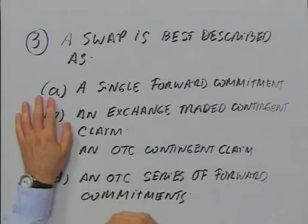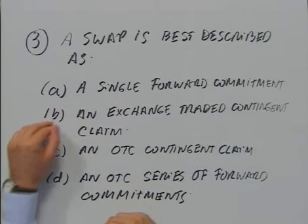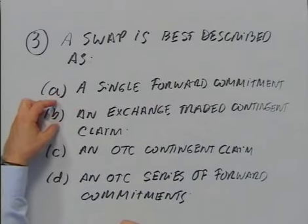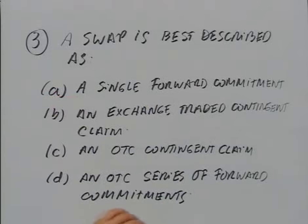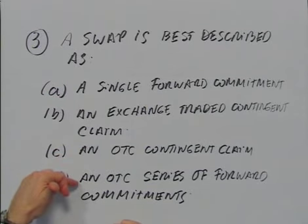Now a question regarding swaps. A swap is best described as: A, a single forward commitment; B, an exchange-traded contingent claim; C, an over-the-counter contingent claim; or D, an over-the-counter series of forward commitments. First thing to recognize here is that a swap is not an exchange-traded derivative, but an over-the-counter derivative. So all alternatives that reference an exchange — A and B — should be eliminated.